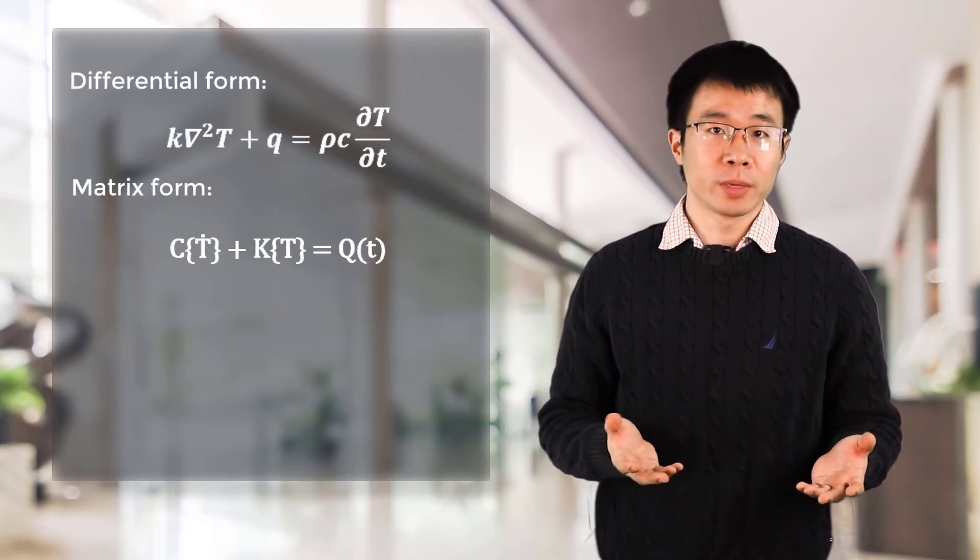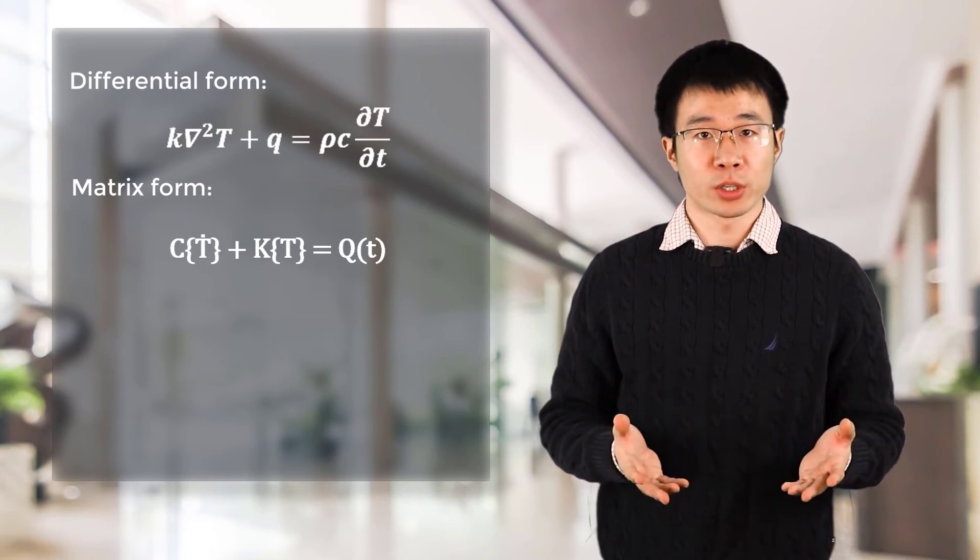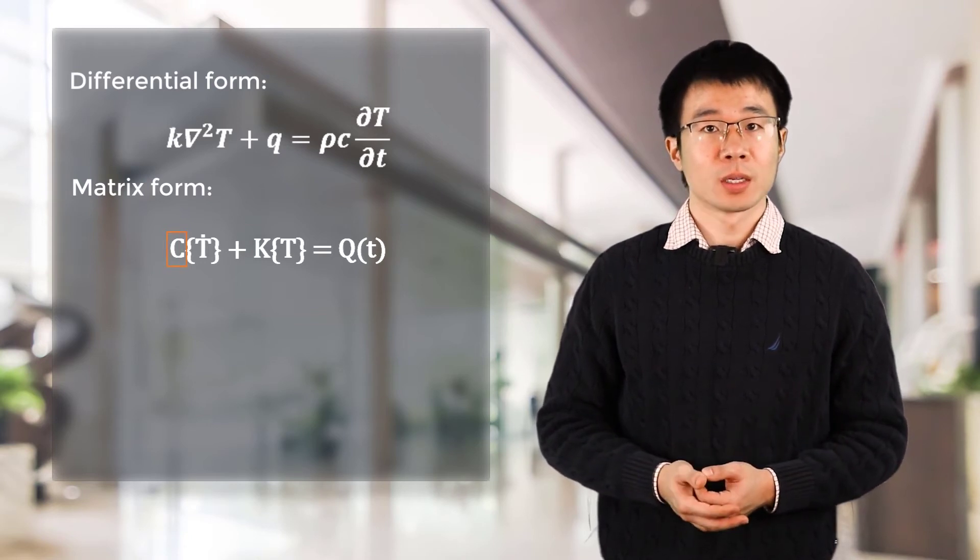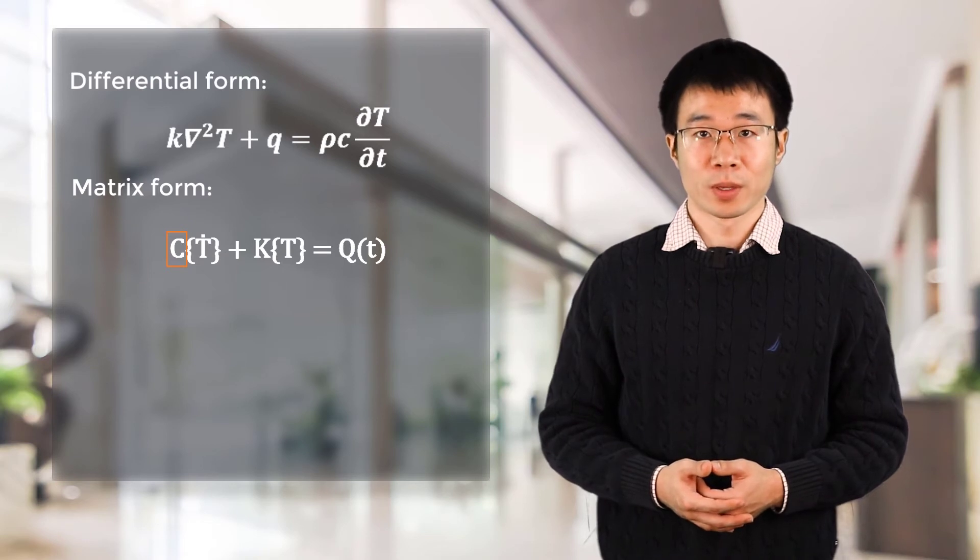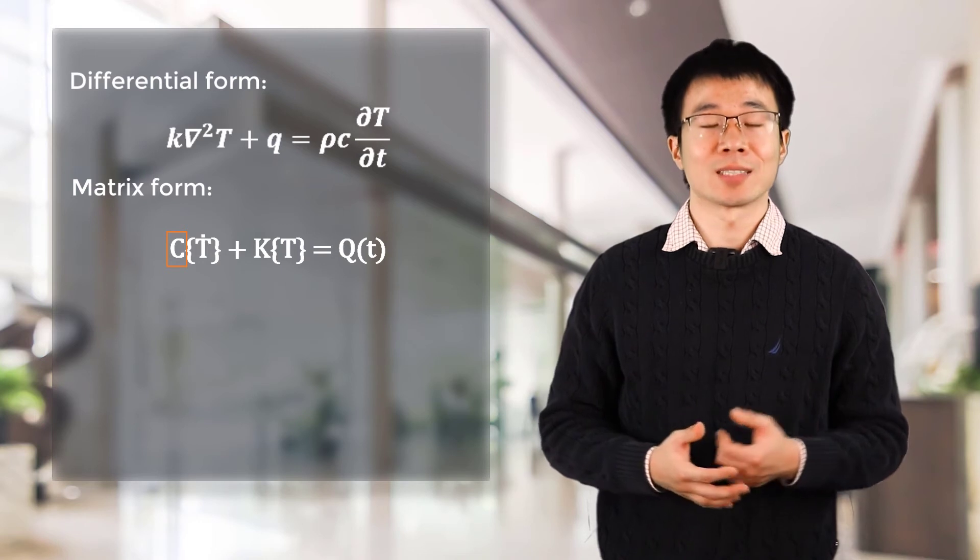In numerical solver, we solve the governing equation in matrix form instead of the differential form. In the matrix form of heat equation, where the uppercase C is the thermal capacitance matrix, containing information of density and specific heat of the problem. More information of thermal capacitance and specific heat will be covered in the following lesson.